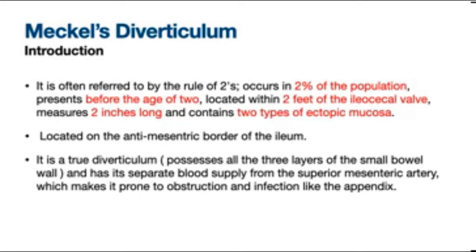Meckel's diverticulum is known by the rule of twos: it occurs in 2% of the population, presents before the age of 2, is located within 2 feet of the ileocaecal valve, measures 2 inches long, and contains two types of ectopic mucosa — primarily gastric and pancreatic tissues.